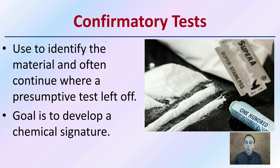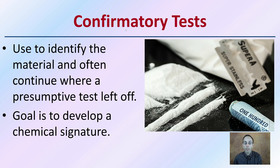Then we get into what we call confirmatory tests. These are used to identify the material and often continue where a presumptive test left off. The presumptive test gives us a general idea, and then the confirmatory test tells us exactly what it is — the intention being to develop a chemical signature and match that up with a particular type of substance.